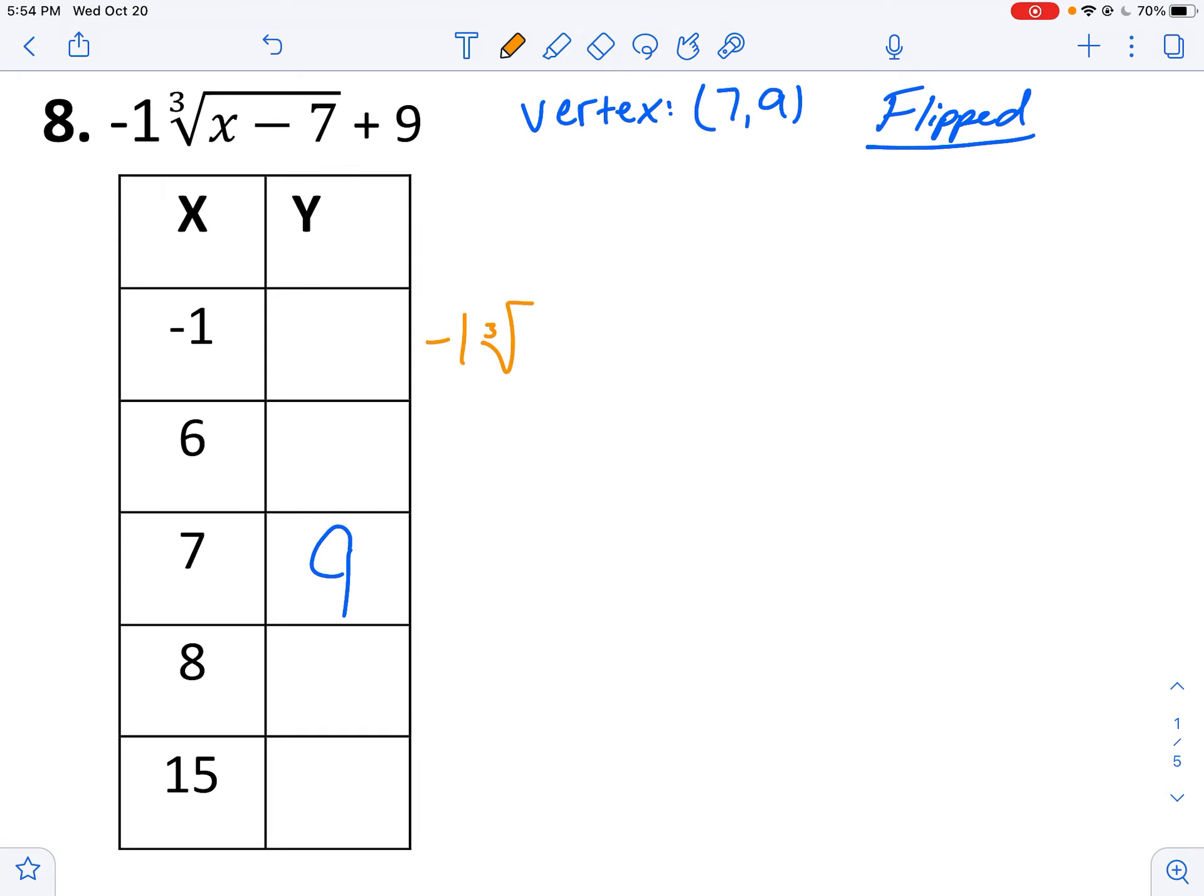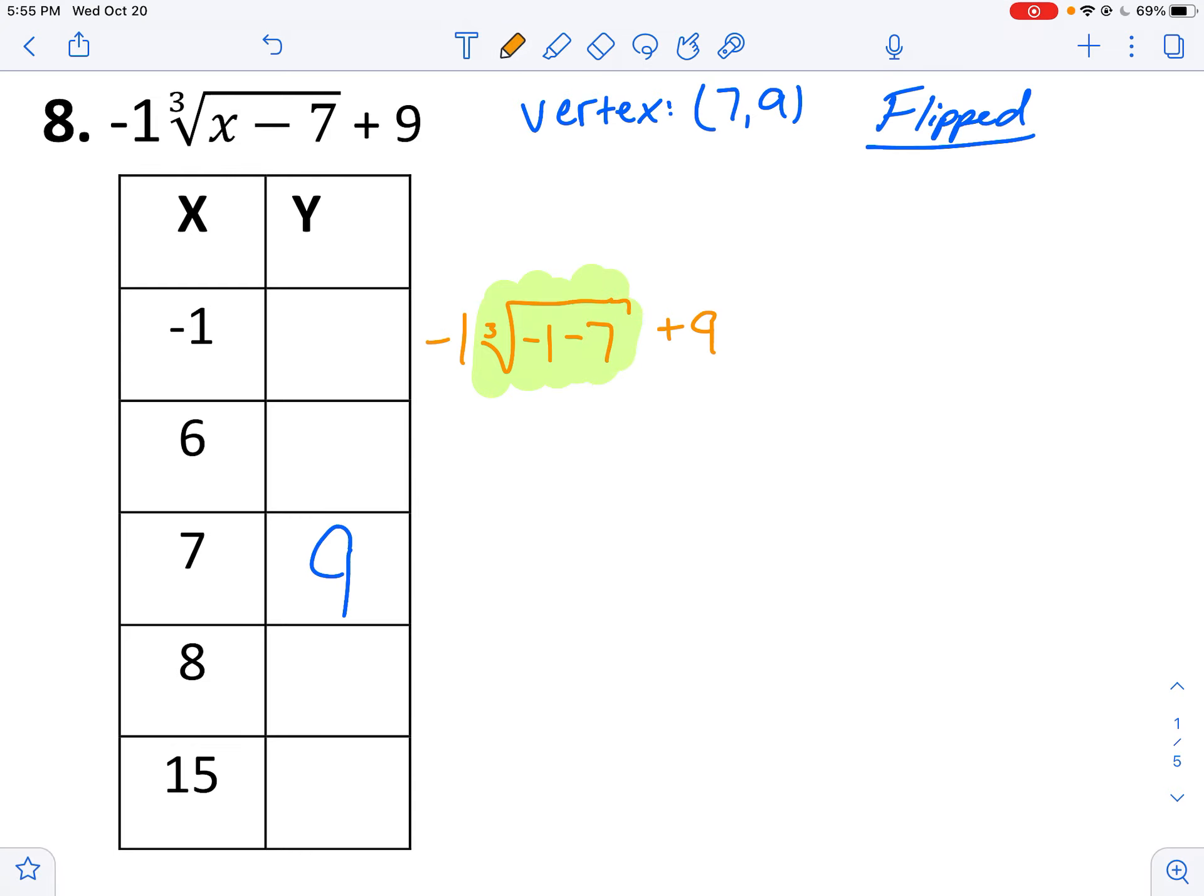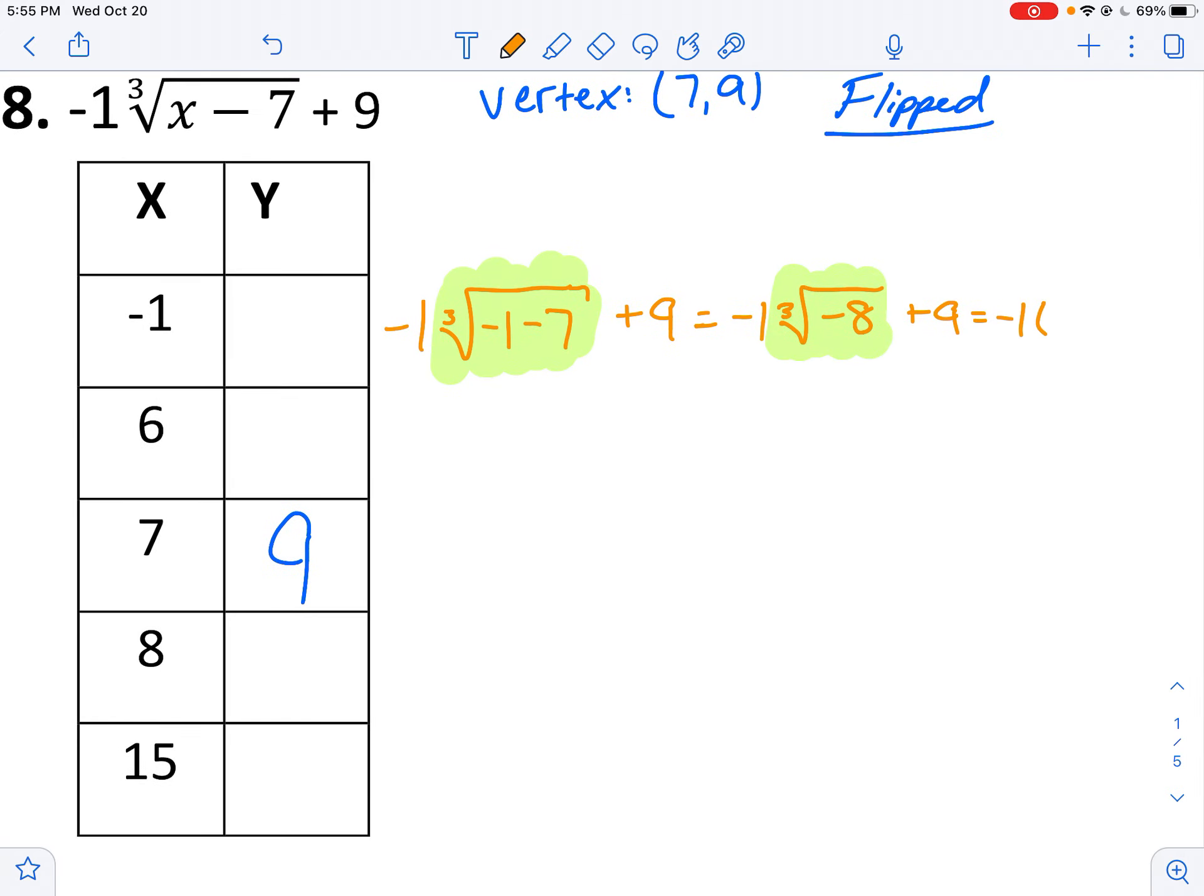Alright, so just remember to keep that negative 1 out front. That's one of the biggest mistakes students make. And I'll substitute in minus 1 for x. And all we're going to do here is simplify the cube root. That's all we're going to do. First, we will simplify the cube root. So I'm not going to change anything else about the problem. But I will simplify the cube root. 1 negative minus 7 more negatives gets you 8 negatives. And then I'm going to simplify this cube root again. But I'm not going to do anything else with the rest of the problem. The cube root of negative 8 is negative 2. So I have negative 1 times negative 2 is 2 plus 9, which would get me 11.